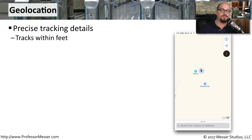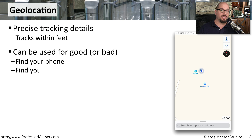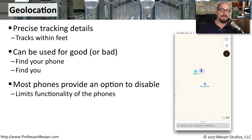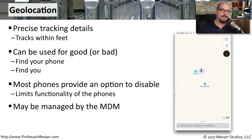Many mobile devices allow you to geolocate the device based on GPS coordinates, some triangulation of signals, and other techniques. Usually you can track this within a couple of feet, so you know exactly where that mobile device happens to be. This can be very handy if you misplace your device. But of course, this could also be used for bad — someone could track exactly where you are based on the location of your mobile device. Many mobile devices allow you to enable or disable this feature, though disabling it may limit some functionality. But most of the time, the security team likes to know exactly where that asset is, to determine if it's in your hands or someone else's.